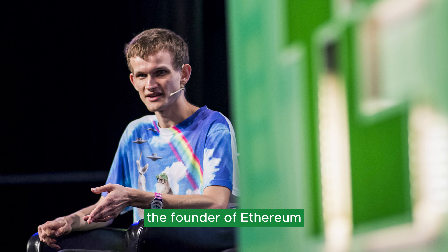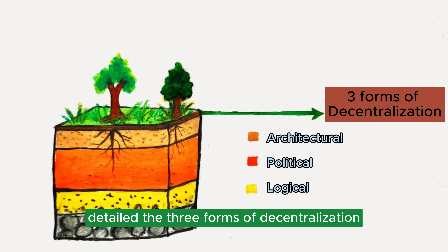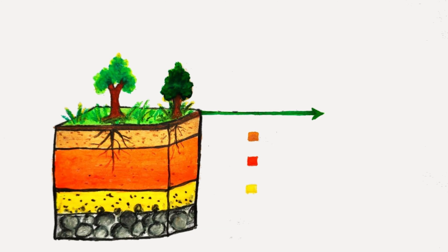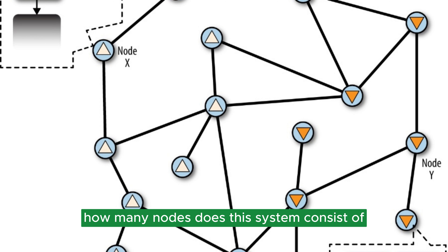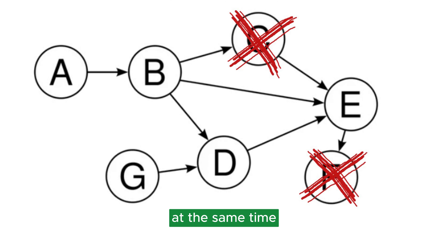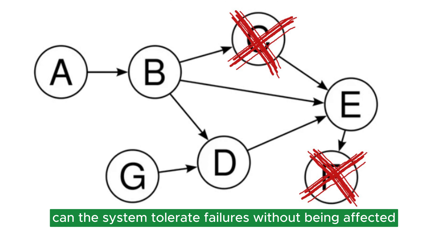This transaction model enables them to complete peer-to-peer transactions autonomously within the blockchain. Vitalik Buterin, the founder of Ethereum, detailed the three forms of decentralization. Architectural Decentralization asks: how many nodes does this system consist of, and how many node failures can the system tolerate without being affected?